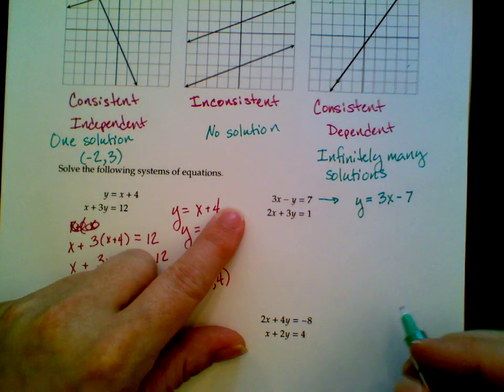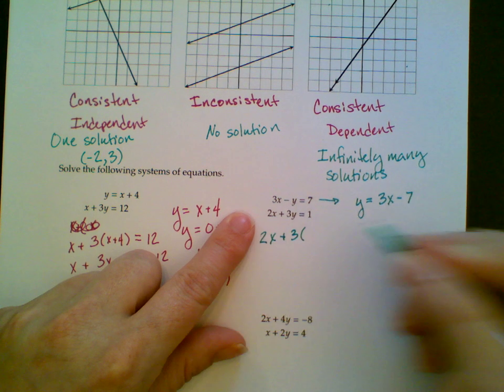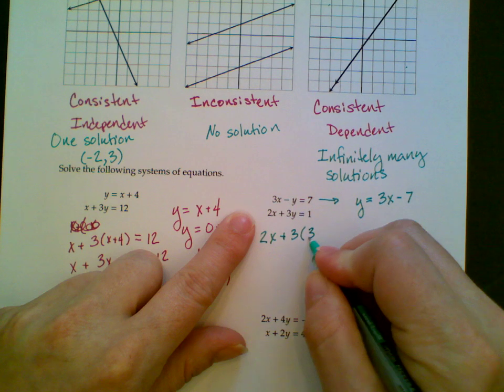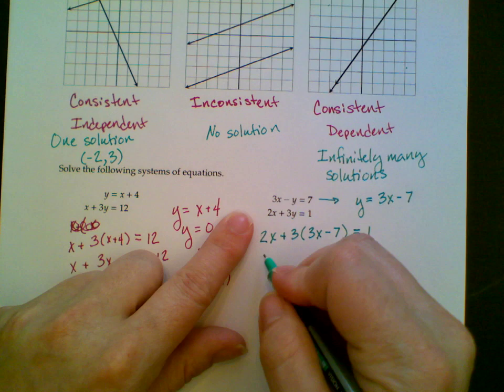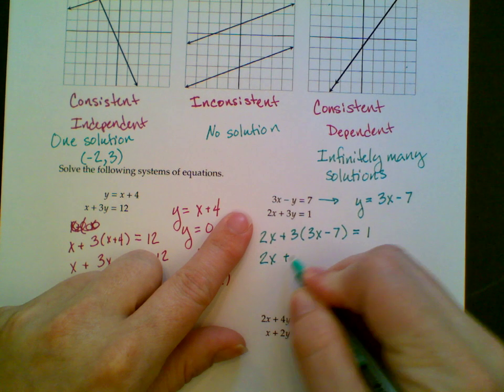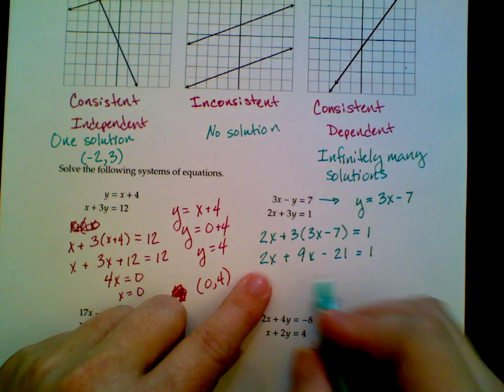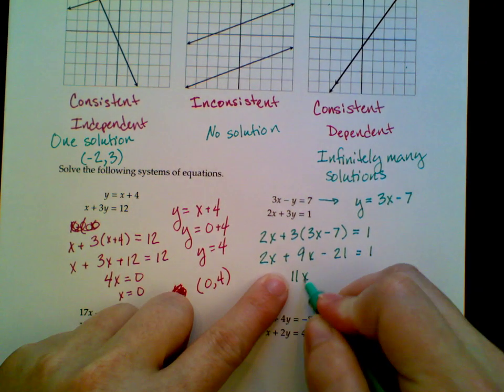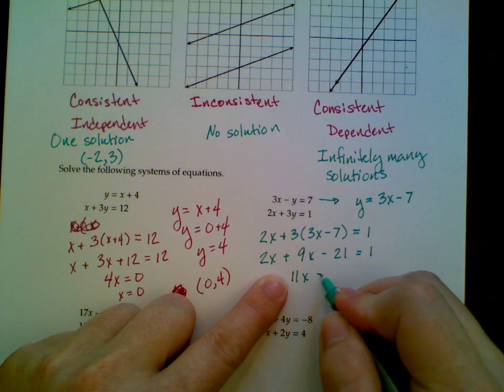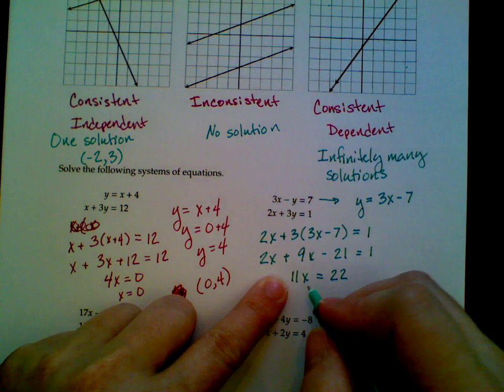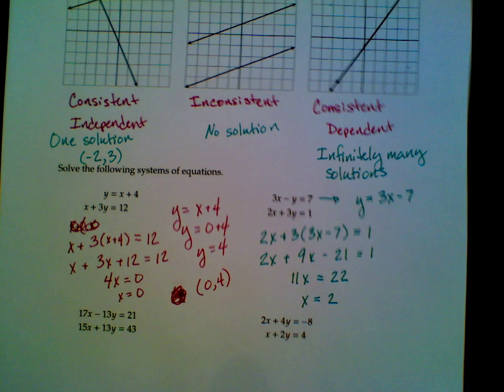I need to bring in the other one. So I've got 2x plus 3 times 3x minus 7 equals 1. So I can distribute my 3. Combine like terms here. That gives me 11x. If I add 21 to both sides, I get 22 on this side. Divide both sides by 11, and x is equal to 2.